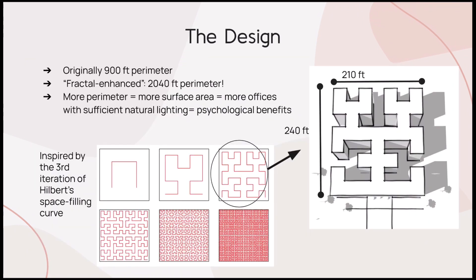Here is the solution to the problem. Originally, the office building had a 900-foot perimeter. In this fractal-enhanced version, inspired by the third iteration of Hilbert's space-filling curve, there is a perimeter of 2,040 feet — more than double the amount. Although this design is certainly inspired by the third iteration of Hilbert's curve, it does not exactly follow it, since it still takes up the same amount of area as the rectangular prism office building. Despite using the same finite area, using fractals an infinite perimeter can be achieved. More perimeter means more surface area, leading to more natural lighting being in direct and indirect contact with the building's interior.